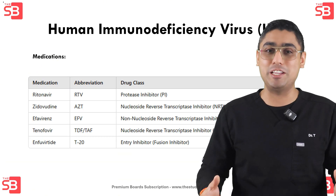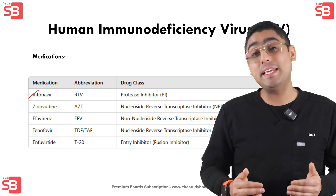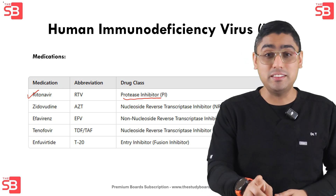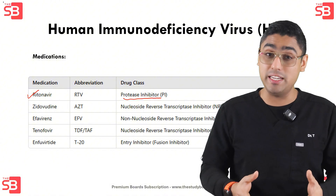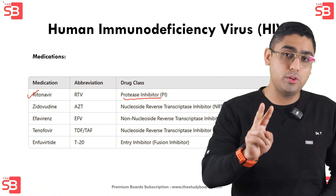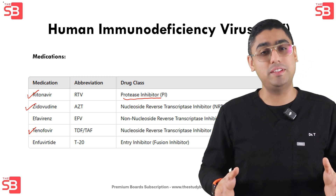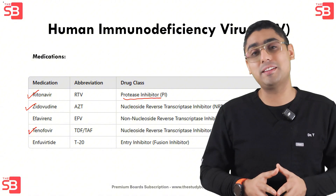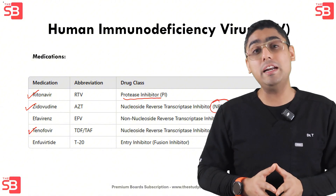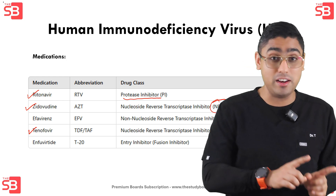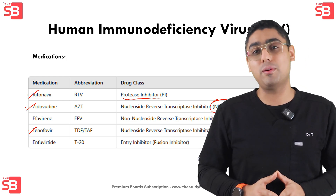Let's look into the various types of medications available to treat HIV. The first is ritonavir, which is a protease inhibitor — it works by blocking an enzyme that HIV needs to replicate. Then there are two more drugs: zidovudine and tenofovir. Both of these are nucleoside reverse transcriptase inhibitors — these are exam questions — and they help prevent the virus from converting its RNA into DNA, effectively stopping it from multiplying.